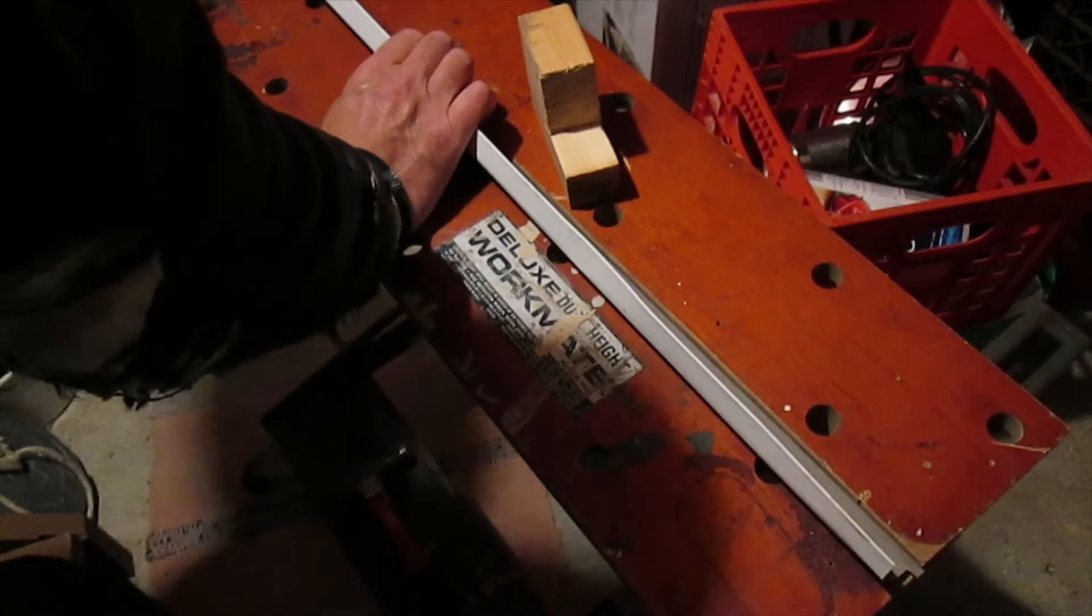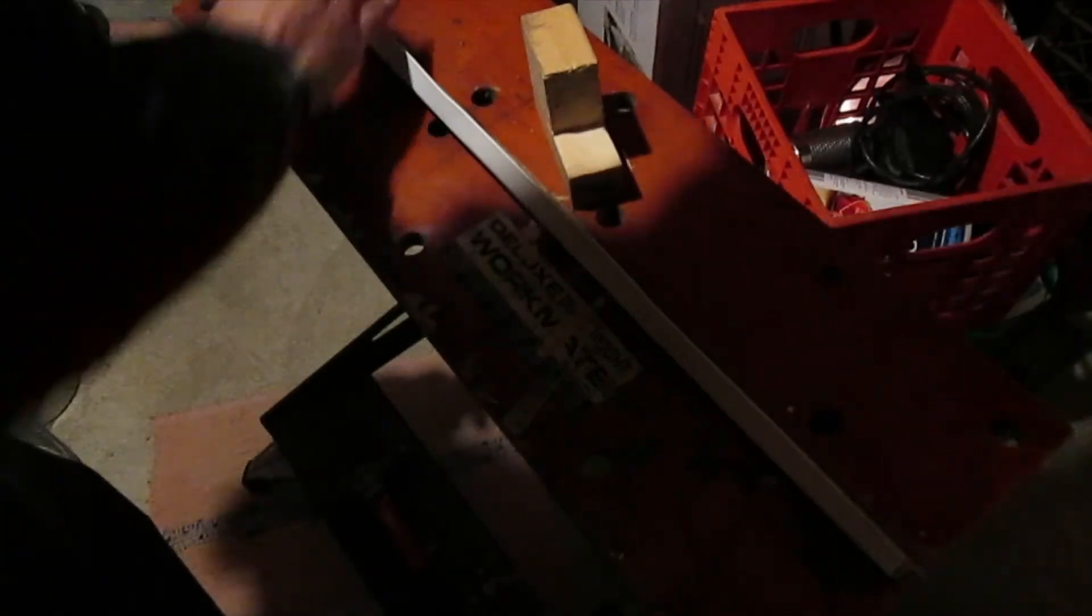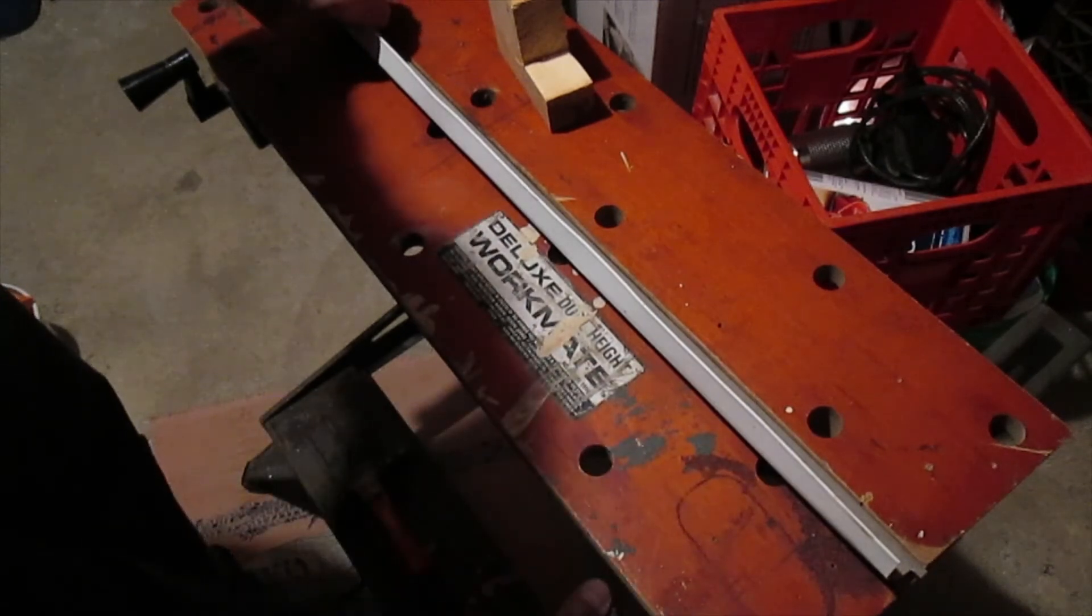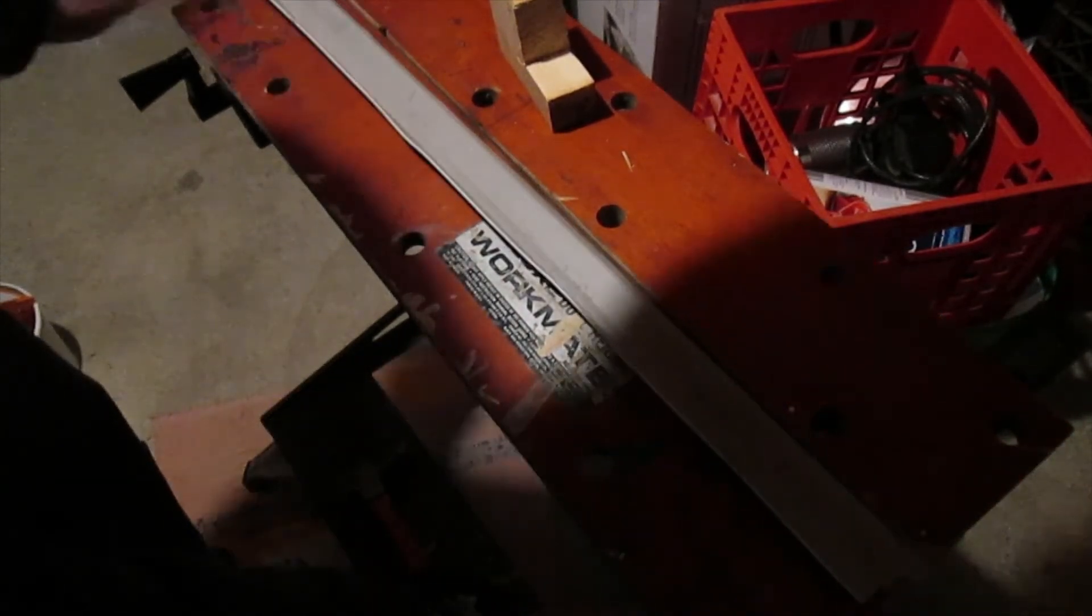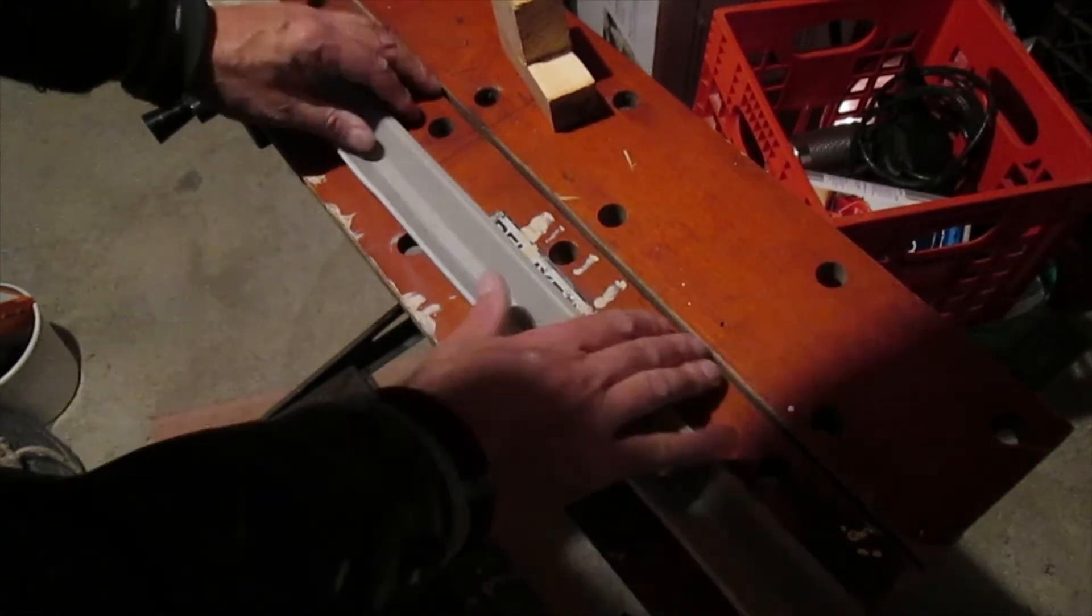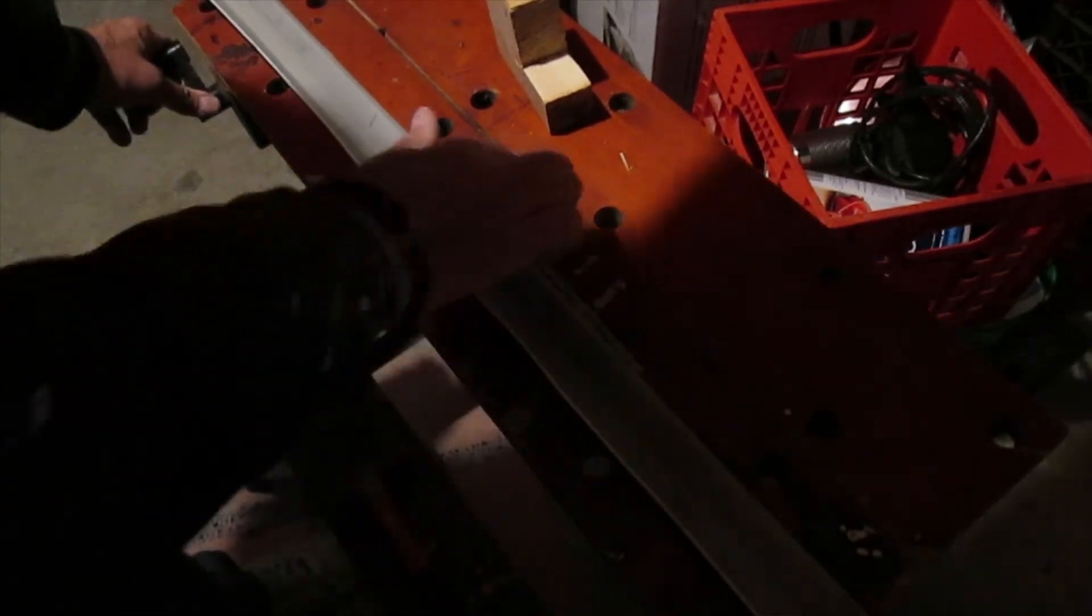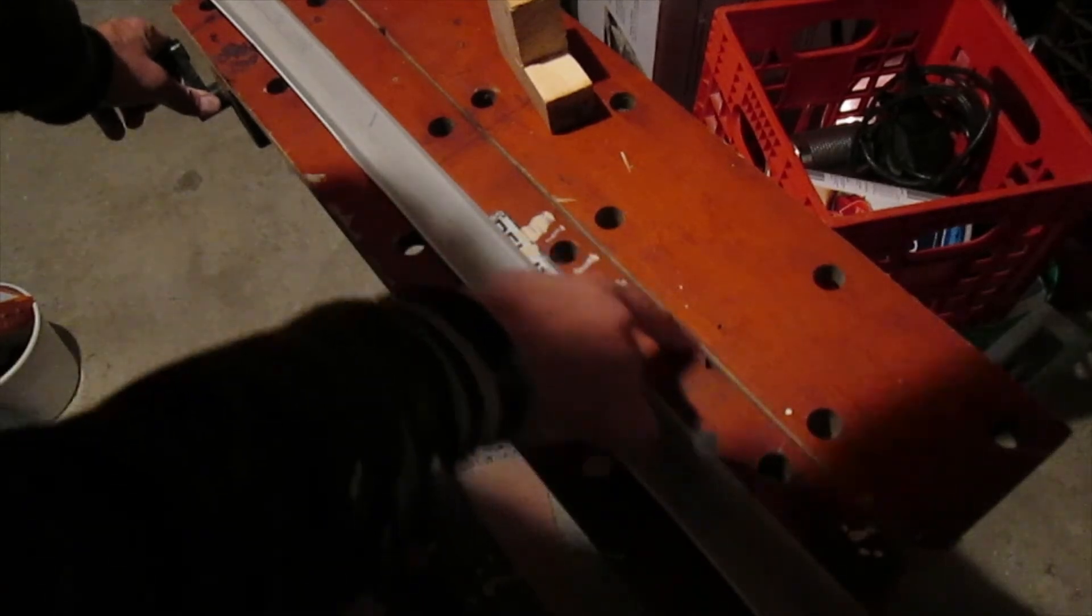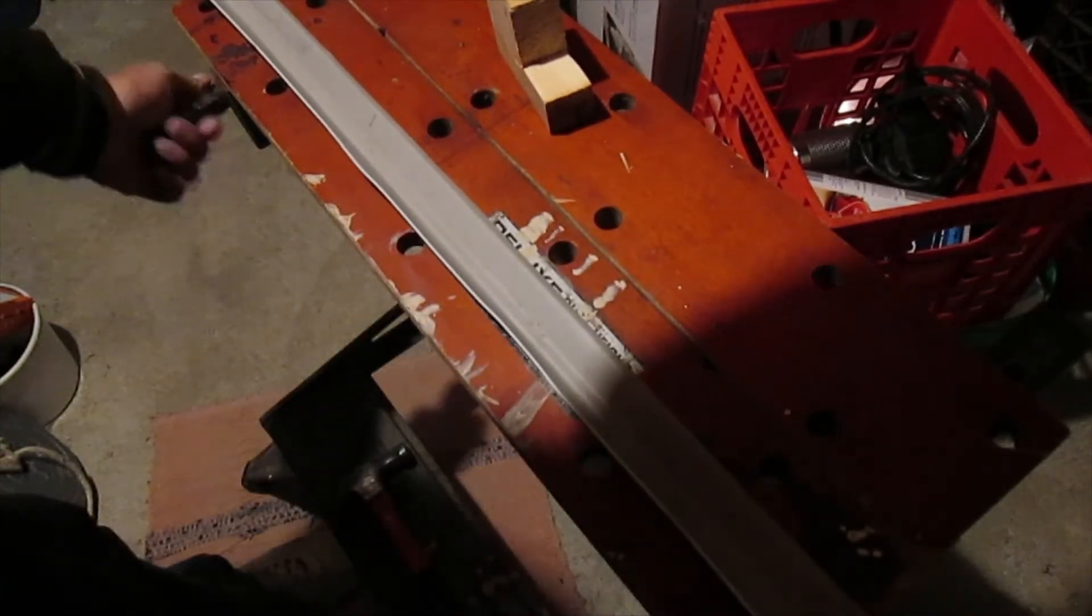This side doesn't like to stay clamped for some reason. This side doesn't want to stay clamped. There's only about a quarter of an inch down in the workmate. I suppose that's why it's not cooperating. It's just such a small piece there. This is not perfectly parallel either. Looks like it might be bowed out a little bit in the middle.